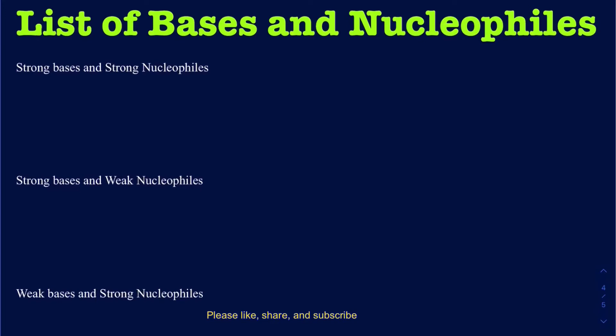Hello everyone. In this video, I'm going to be talking about the list of bases and nucleophiles — the most common bases and nucleophiles you're going to be seeing in sophomore organic chemistry, and how you're going to be differentiating between a strong base/strong nucleophile, a strong base/weak nucleophile, and so on. I'm going to be putting those in a list here.